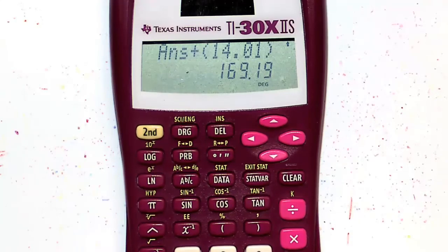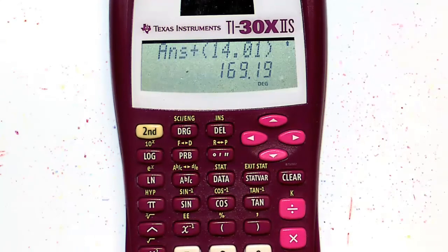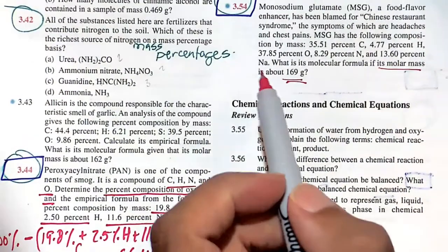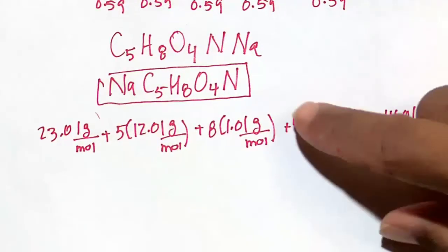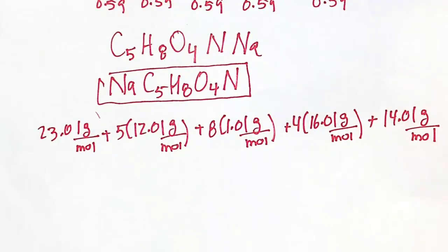About 169.19 grams per mole, and yeah, that matches it pretty well here. It's telling us it's about 169 grams. So, this is, I can state with reasonable confidence that this is the formula of the chemical additive MSG.